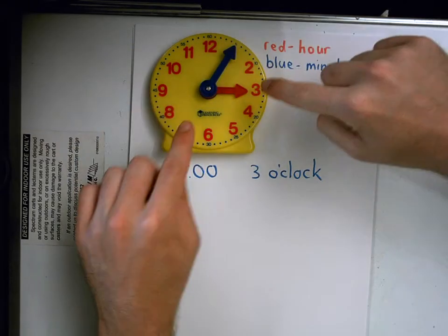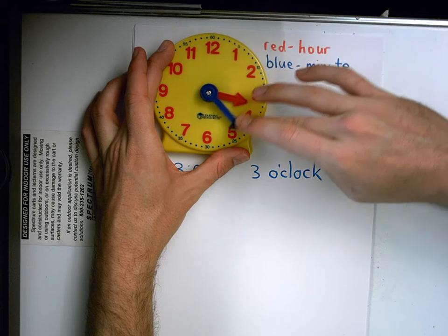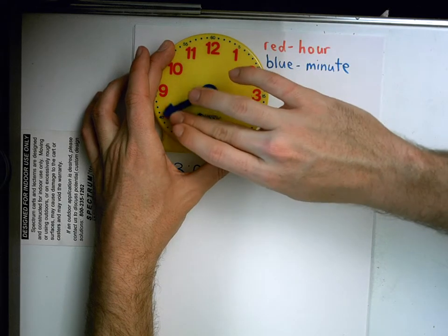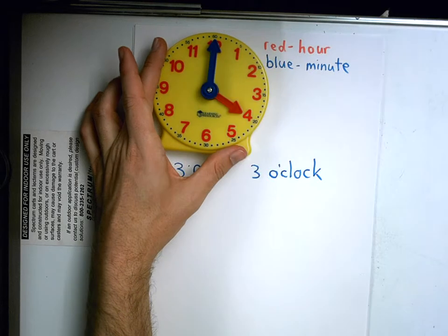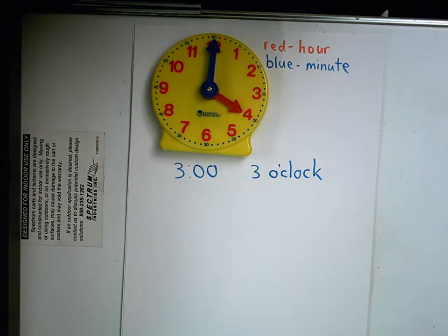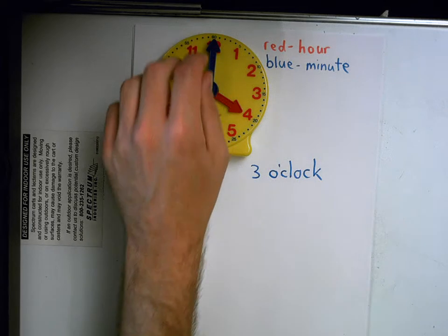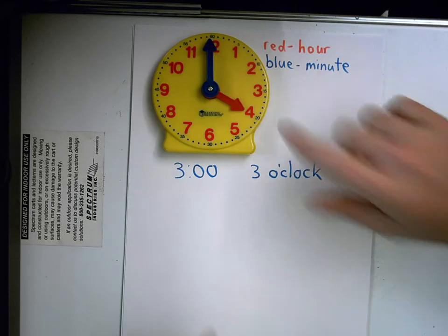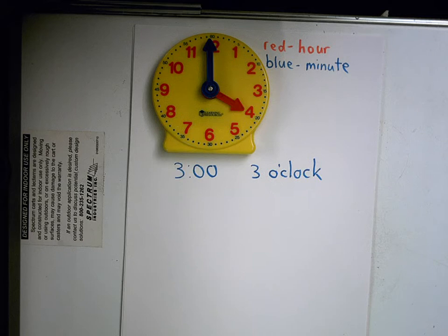Look what happens to my hour hand as I move my minute hand around the clock. It just went around 60 minutes. What happened to the hour hand when that minute hand moved 60 minutes? 60 minutes is all the way around the clock. It went all the way around the clock. So 60 minutes. What happened to that hour hand?